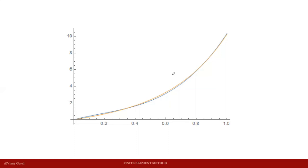This plot shows the exact solution in yellow and the solution by the strong form Galerkin in blue, which is fairly close to the exact solution — a pretty decent approximation. We have shown that the advection-diffusion problem for 1D models using the strong form Galerkin, with natural and essential boundary conditions enforced, matches the exact solution of the mass transport problem.